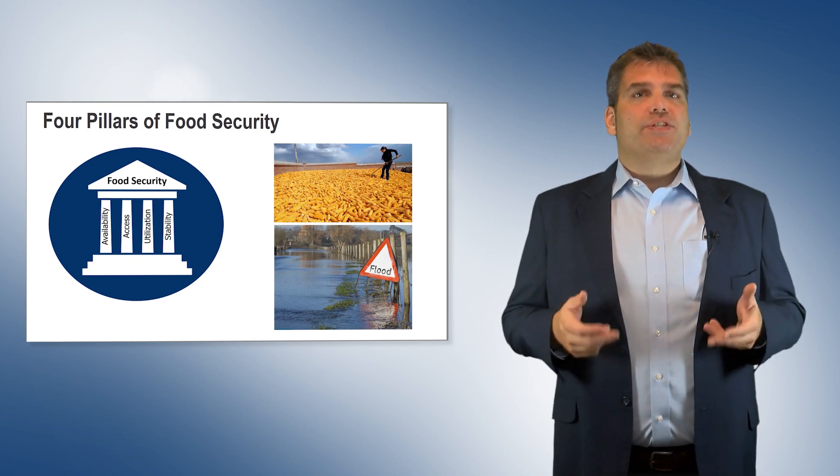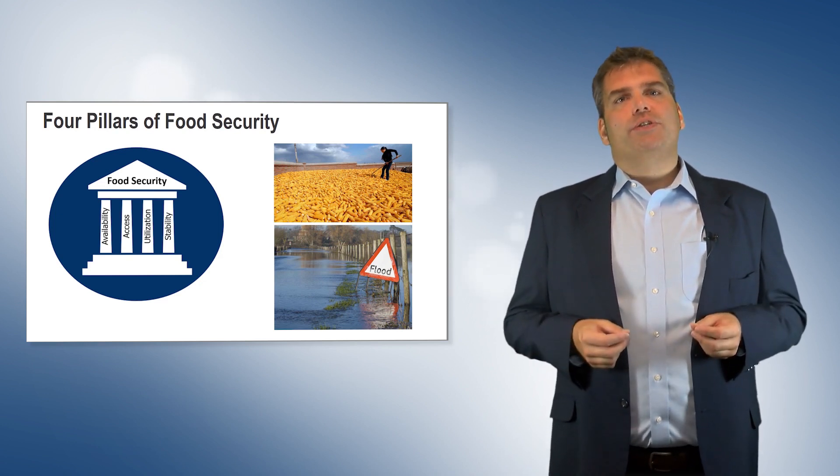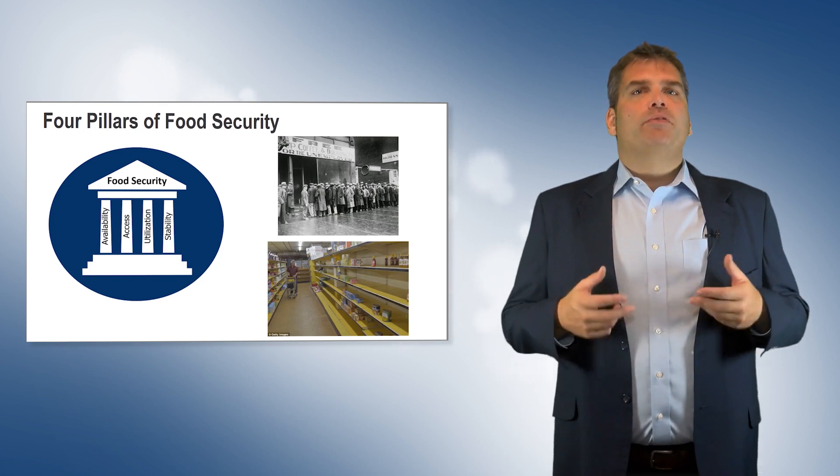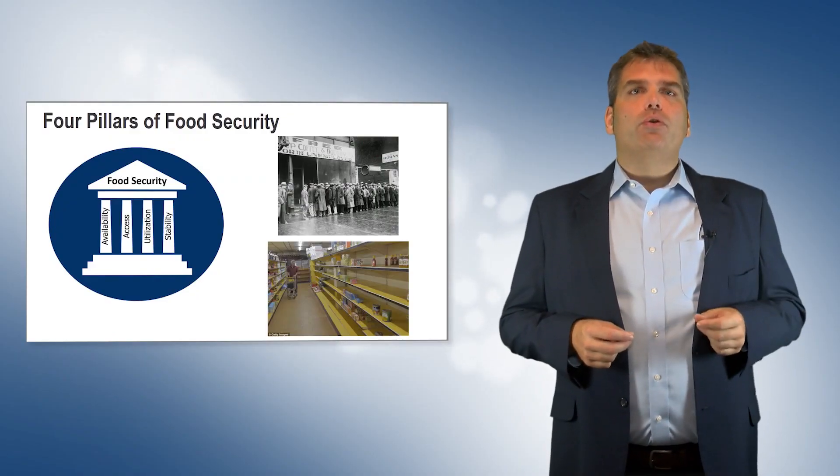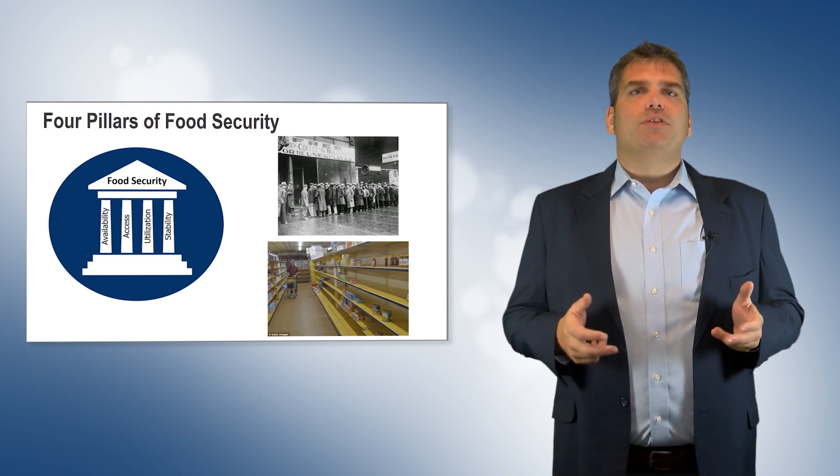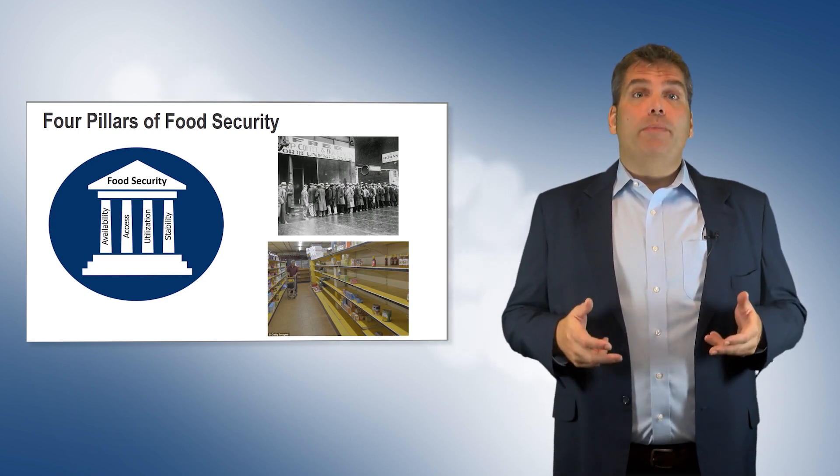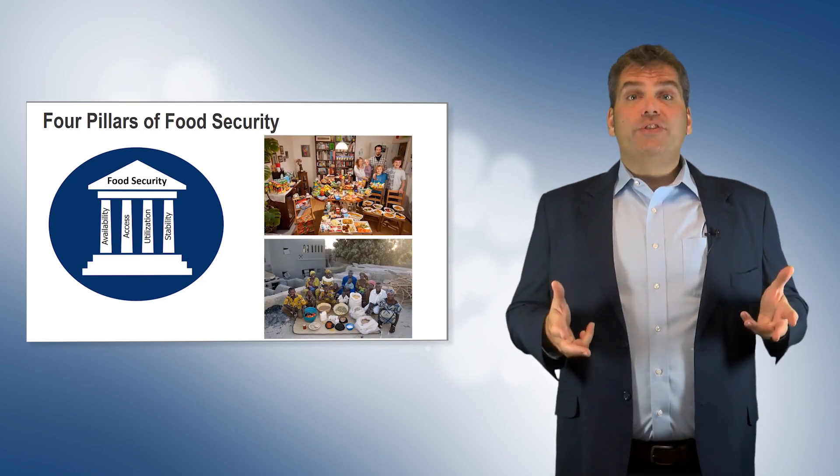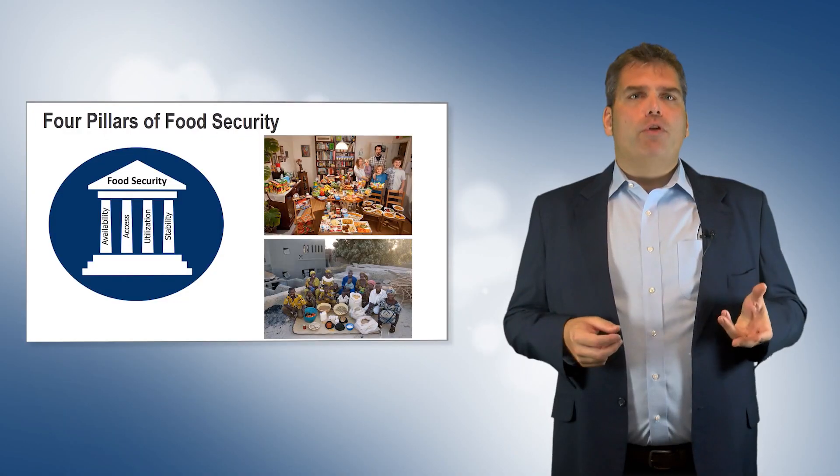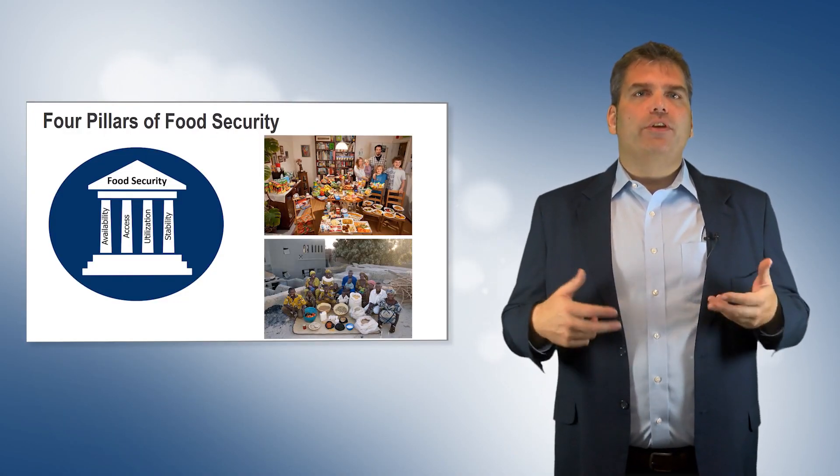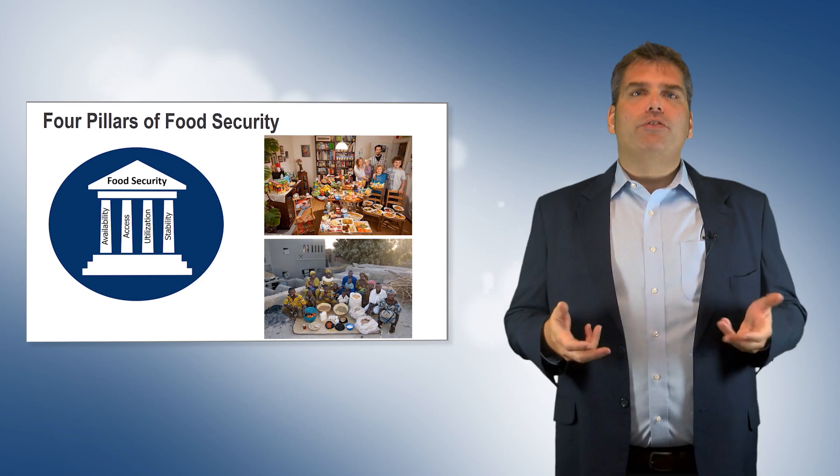Access, utilization, and stability represent the demand side of food production. Access refers to the purchasing power of a population. There can be an adequate food supply, but if the population is economically poor, they can't afford to buy it. Price spikes due to local or global food shortages can prevent access to the world's poor, while richer populations remain unaffected. Utilization deals with nutrition. It not only concerns which kinds of foods are consumed, but how food is processed and prepared. Fried, processed meals consisting mostly of carbohydrates, for example, would be considered poor utilization.